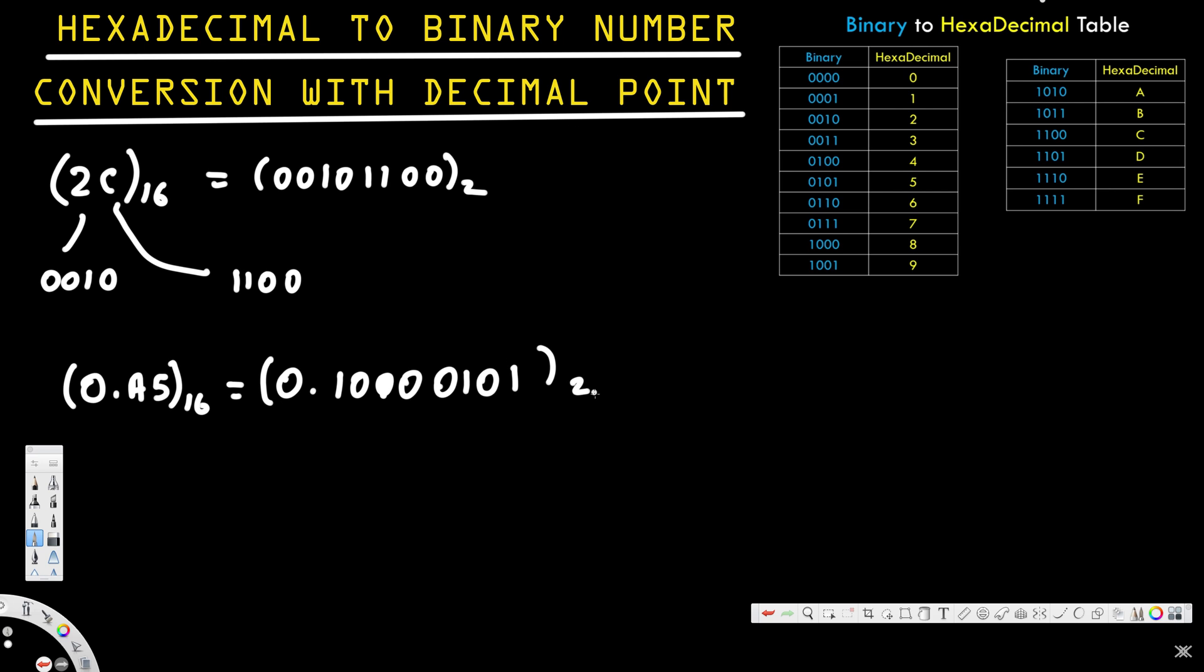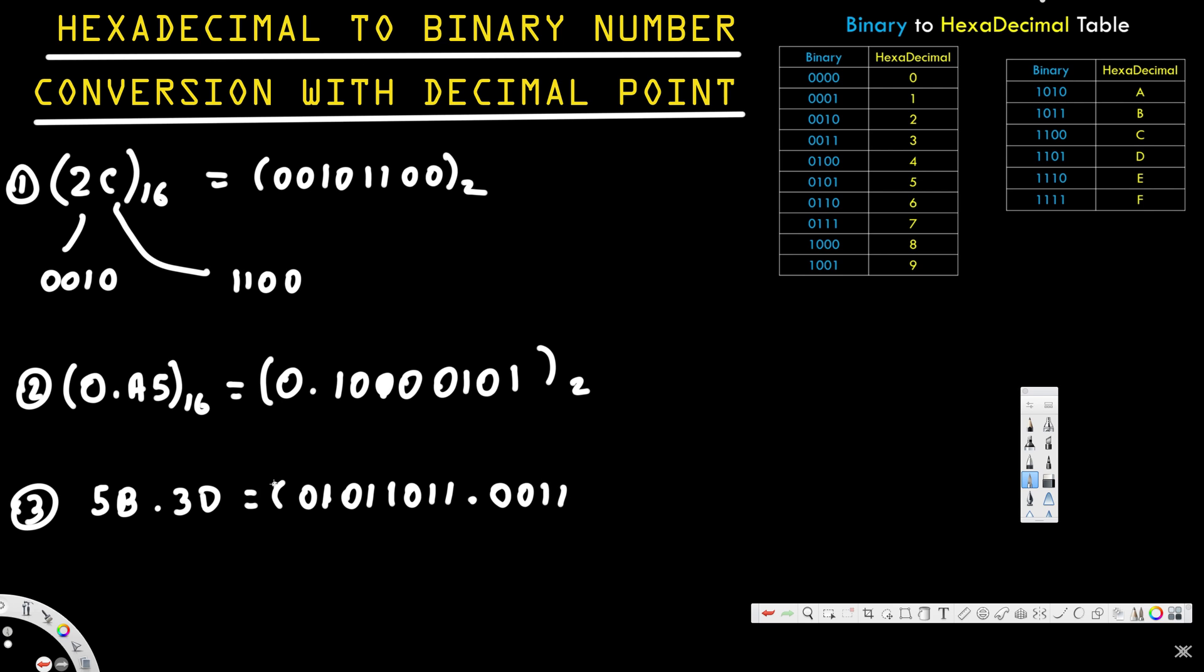Now let's look at another example - this is example 3. Let's say we have 5B.3D in hexadecimal. For 5, the corresponding binary number is 0101. For B, we have 1011. For 3, we have 0011.